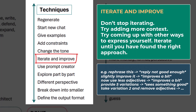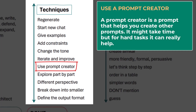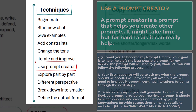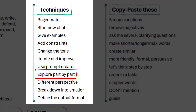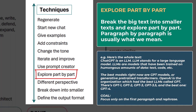Number six: don't stop iterating. Try adding more context, try coming up with other ways to express yourself, and iterate until you have found the right approach. Number seven: use a prompt creator — a prompt that helps you create other prompts. It might take time, but for hard tasks it can really help. Number eight: break the big text into smaller texts and explore part by part — paragraph by paragraph is usually what we mean. GPT is smart, but it is not human.